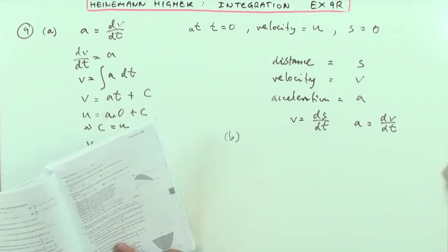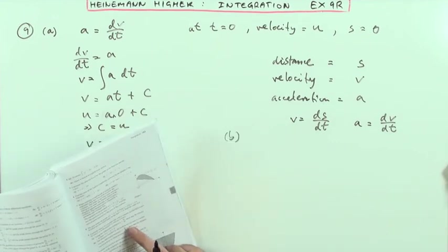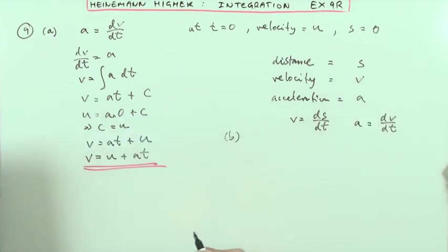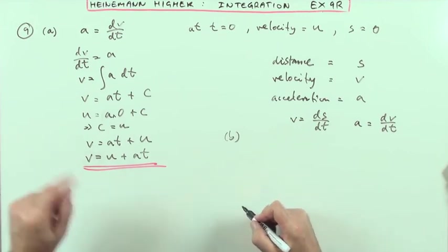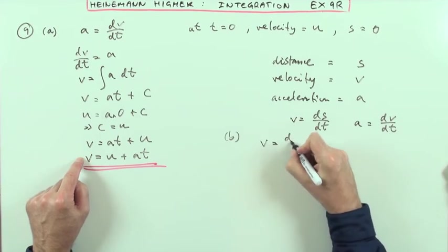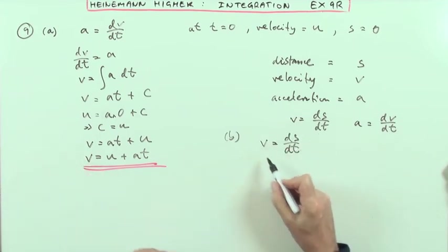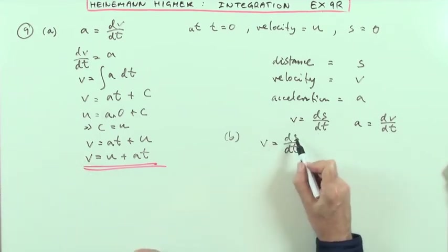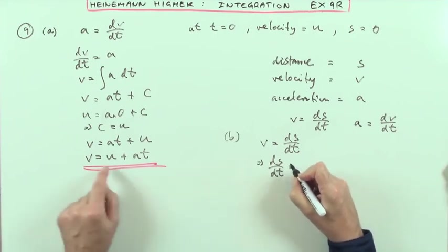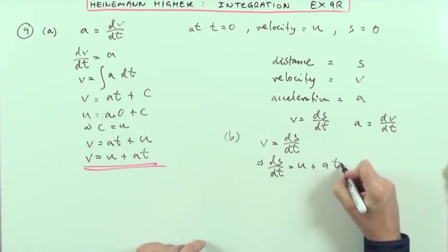Part B says, the distance travelled by a particle in t seconds is s metres. Show that s equals ut plus a half at squared. Well I've got my velocity equation. Here's the velocity. Now I know that velocity is equal to ds by dt. The velocity is the rate of change. Just like distance over time, difference in distance over difference in time.